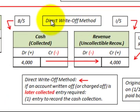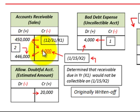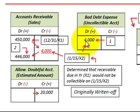Now let's look at the direct write-off method. Before going through the recovery entries, let's see how it was originally written off. We have this $4,000 of accounts receivable determined to be no longer collectible. We credit accounts receivable for $4,000, and the debit goes to bad debt expense on the income statement, increasing it by $4,000. This method does not involve the allowance contra account.